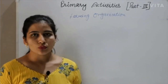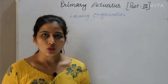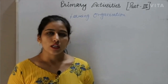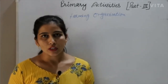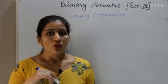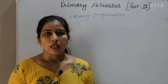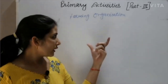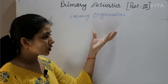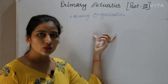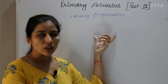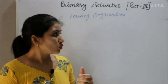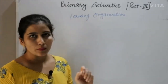Now we discuss types of farming according to farming organization. Farming organization depends upon the way in which farmers own their farms and the policies of the government applied to the production area. There are two types: cooperative farming and collective farming.